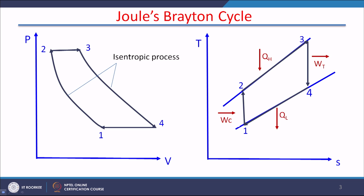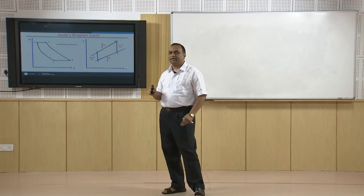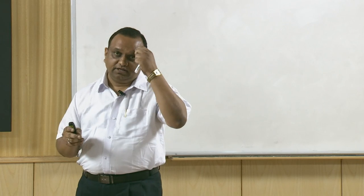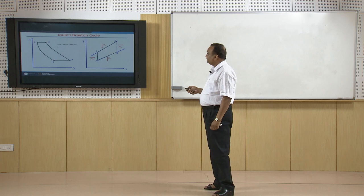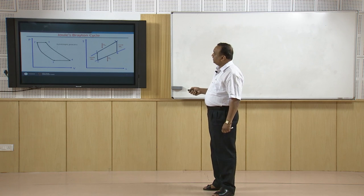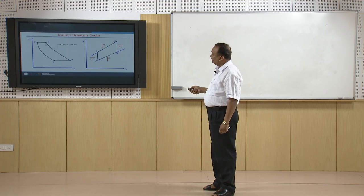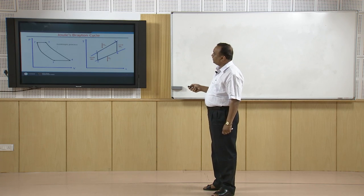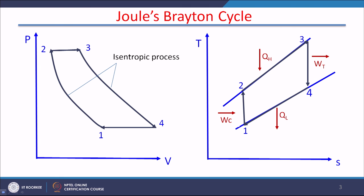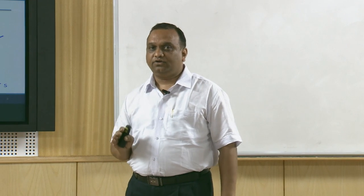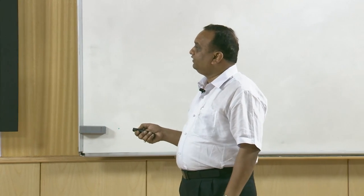In this cycle, air is the working fluid. Air is compressed from state 1 to state 2 through a compressor. At state 2, constant pressure heat addition takes place. Normally in gas turbines there is a separate combustion chamber where heat addition takes place, but since it is an air standard cycle, it is assumed that throughout the cycle air is the working fluid. From state 2 to state 3, constant pressure heat addition to air takes place.